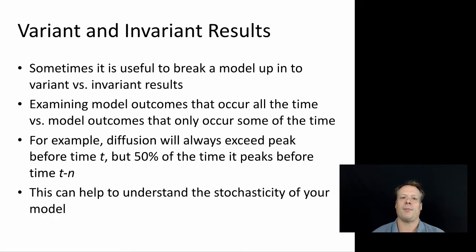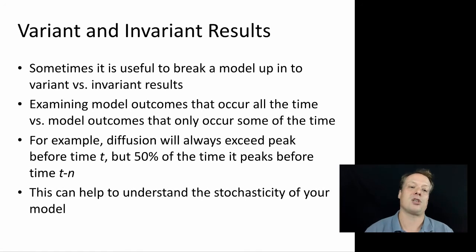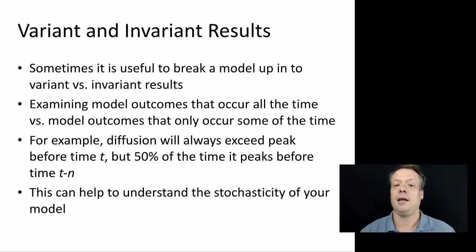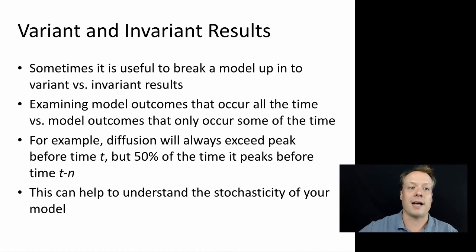One useful thing to do is think about the difference between when your model says something is variant and when it says something is invariant — in other words, it's always going to happen. You could examine model outcomes that occur all the time versus those that only occur some of the time. This can tell you when your model is confident something will happen and when there might be path dependency.